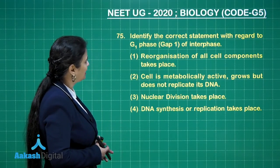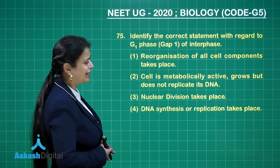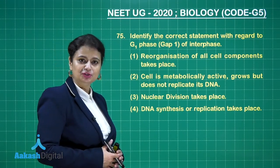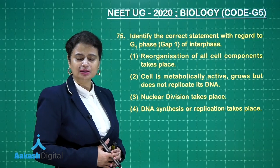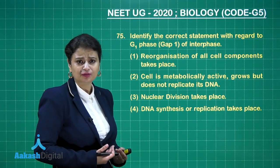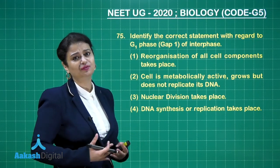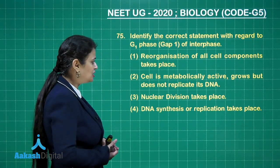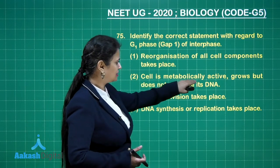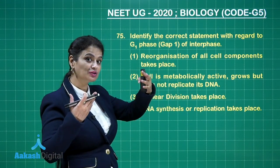Question 75: identify the correct statement with regard to G1 stage. The cell cycle is divided into two phases: interphase and M phase. In interphase there are three phases — G1, S, and G2. In G1 phase, the cell grows and is metabolically active, but does not replicate its DNA because DNA replication occurs during S phase. So this is the right answer.